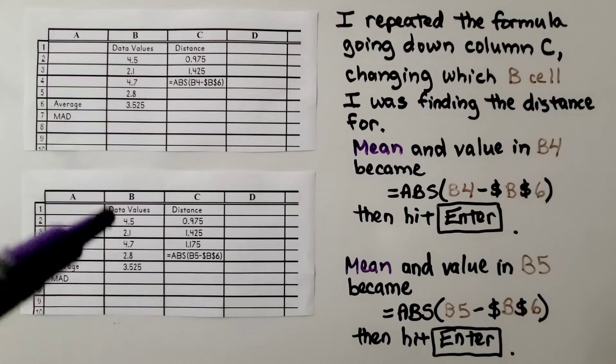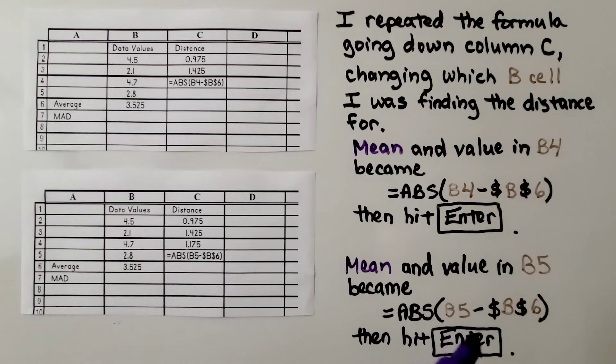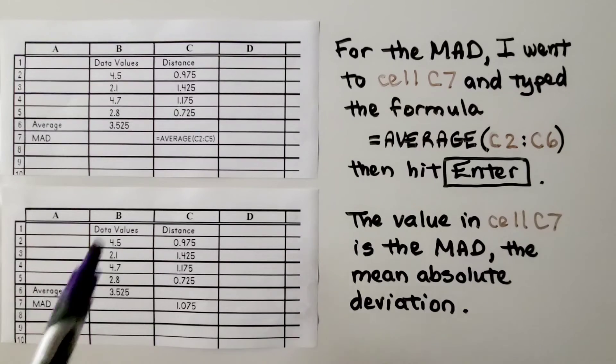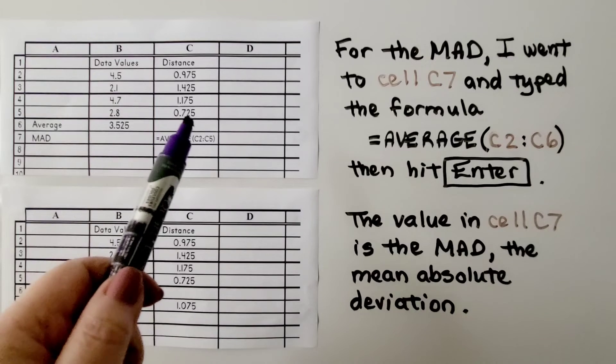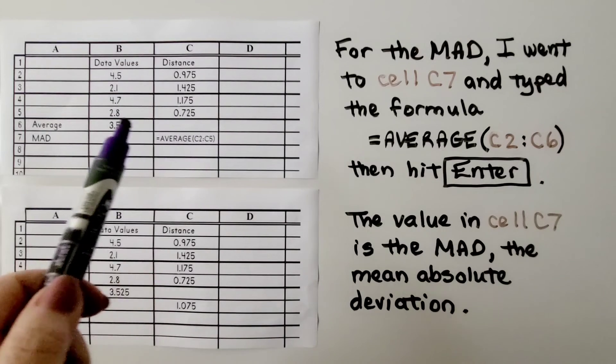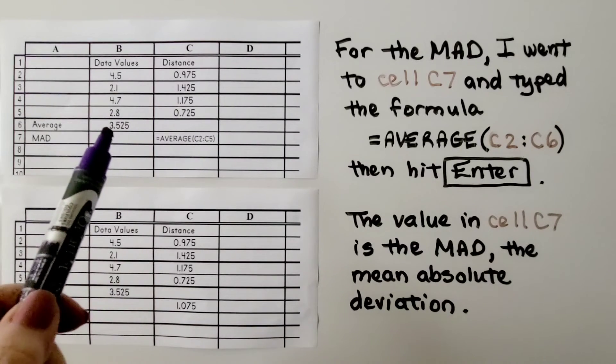Then I did it for B5. So now the formula is B5 minus the dollar sign B dollar sign 6. Then I hit enter. And then it gave us 0.725 for the distance between 2.8 and the mean, the average.